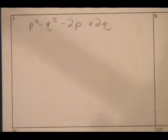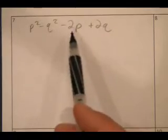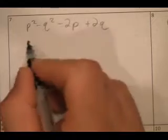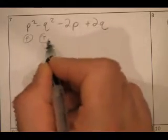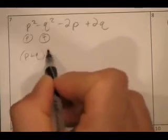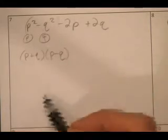How can I group these guys? All right, well I notice right off the bat I have a difference of two squares. Perfect square, perfect square. These guys have a two in common. This is P plus Q times P minus Q. That takes care of this group.